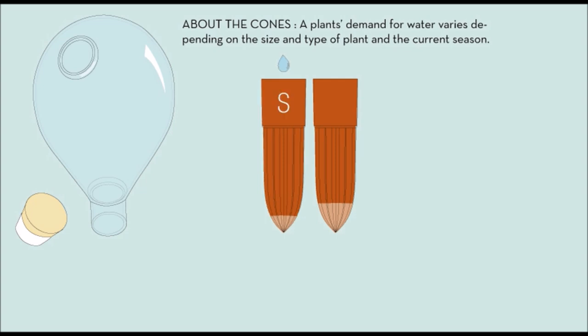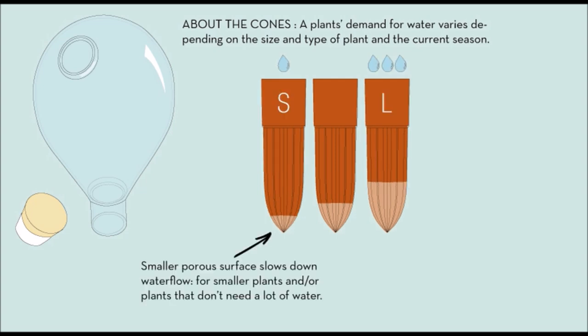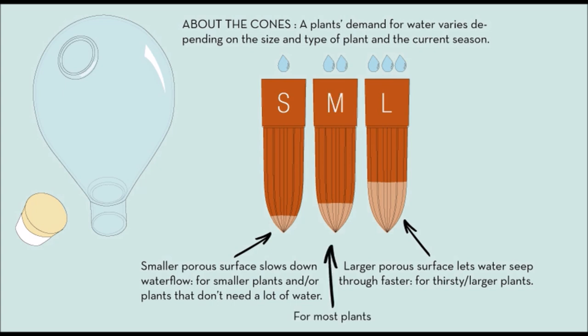Some plants need more water, or less. Use a cone with a smaller or larger porous surface to regulate water flow. Most plants, however, are fine with the medium cone.